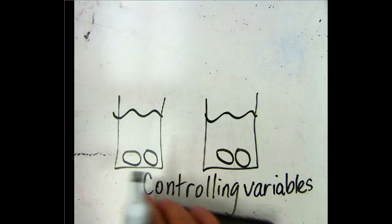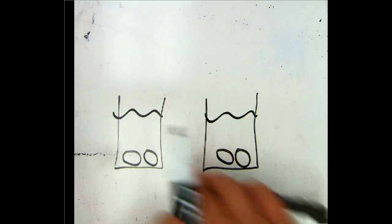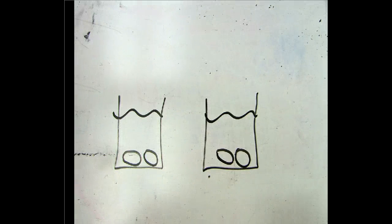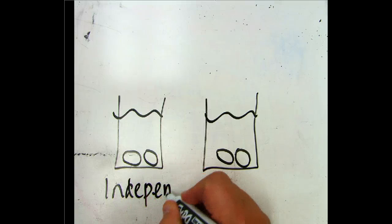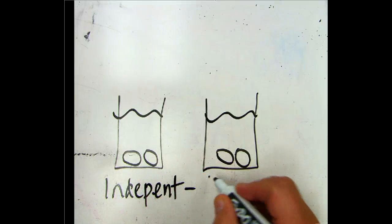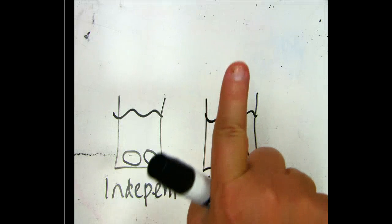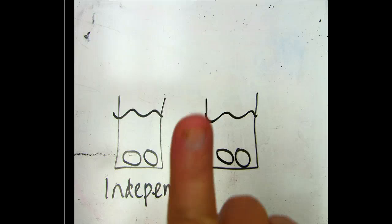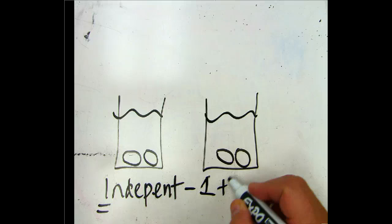The next thing that you need to understand is what an independent variable and a dependent variable is. An independent variable is the one thing that we change. And I don't know if you guys remember me putting up my finger. The one thing that we change is the independent variable.